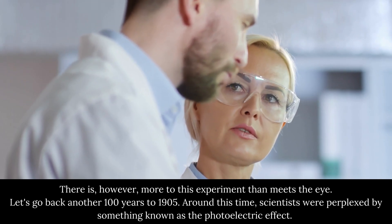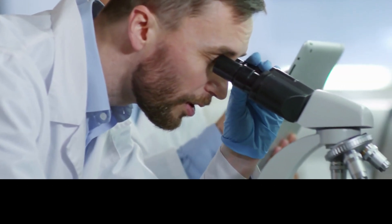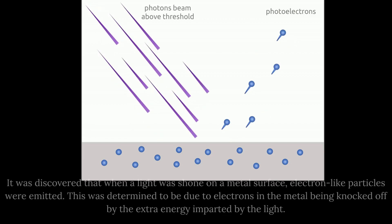Around this time, scientists were perplexed by something known as the photoelectric effect. It was discovered that when a light was shone on a metal surface, electron-like particles were emitted. This was determined to be due to electrons in the metal being knocked off by the extra energy imparted by the light.